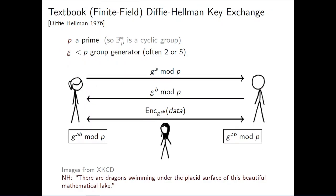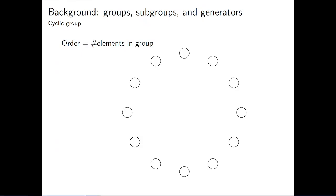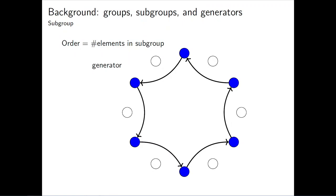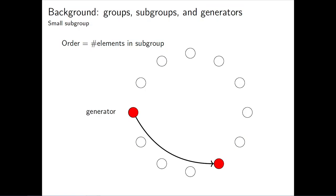This protocol seems pretty simple and looks easy to implement, but to quote my advisor, there are dragons swimming under the placid surface of this beautiful mathematical lake. Before we get into what those dragons are, we need to cover some background on groups, subgroups, and generators. Imagine a cyclic group as a circle of elements — the order of the group is the number of elements. We can choose some element G as a generator that, when multiplied by itself, generates every other element in the group. You can also choose generators that only generate some elements — this is called a subgroup. And finally, some generators only generate small subgroups; for every factor of the order of the full group, there's a subgroup with that order.